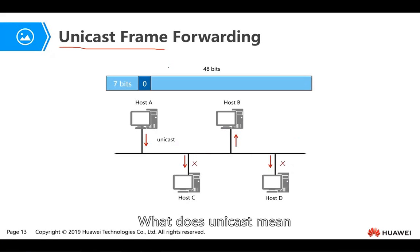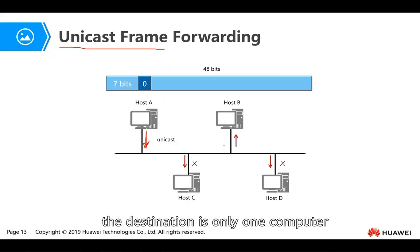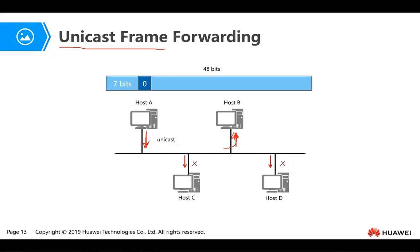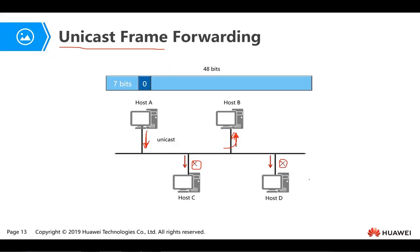What does unicast mean? Unicast means when a computer sends a frame out, the destination is only one computer — only one host — and all other hosts will not accept it. That is one sender and one receiver.